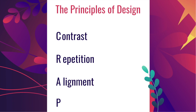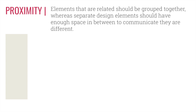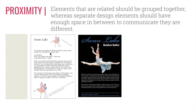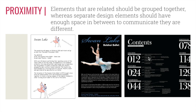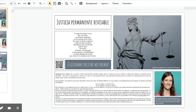Now we're on our final principle of design. We have C for contrast, R for repetition, A for alignment, and P stands for proximity. Proximity says that elements that are related should be grouped together, whereas separate design elements should have enough space between them to communicate that they are different. For example, in the before-and-after Swan Lake flyer, the designer took the title and location out of the body text and separated the show details from directions, grouping similar elements together so the reader could quickly read the flyer. Another example is the table of contents, where page numbers are tucked very close to the article titles.